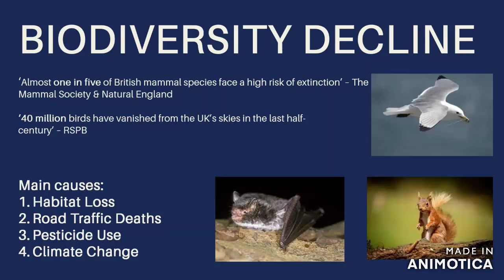Pesticide use is a serious issue. Farmers will use herbicides and pesticides to keep weeds and insect pests off their crops, but often these pesticides are not targeting a single species — they can move through the food chain. If you are targeting specific insects, birds which eat those insects can also be affected. We have something called biomagnification or bioaccumulation, where the levels of a toxin or chemical can increase in concentration up the food chain. The species most at risk are apex predators — mainly birds of prey.